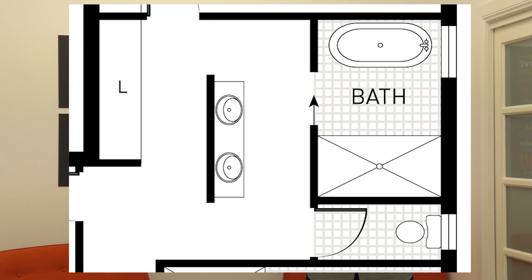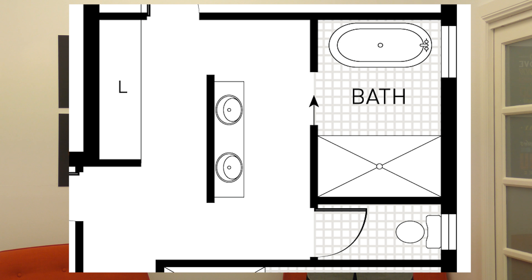So the first bathroom we have here is designed for a larger home. Generally, homes are all different sizes, so some places you'll have a lot more room to play with. As you can see, there's one big open area here with a great double vanity, used as a feature as well. It's also open, so you can walk around the vanity, and then you have a linen cupboard right there.